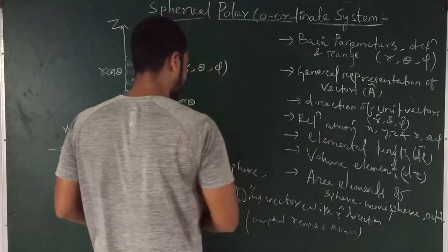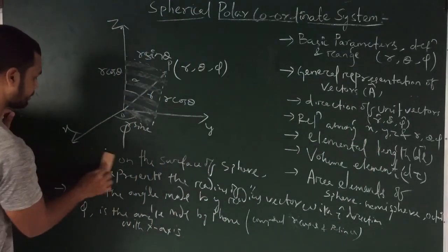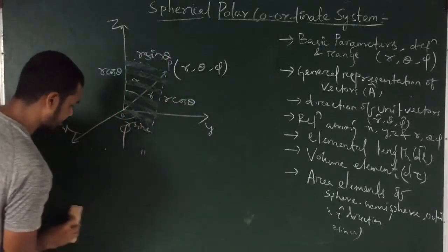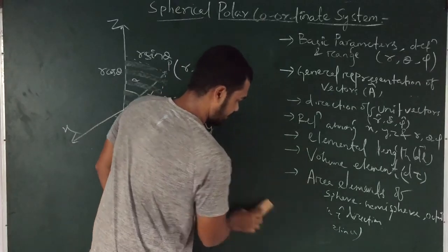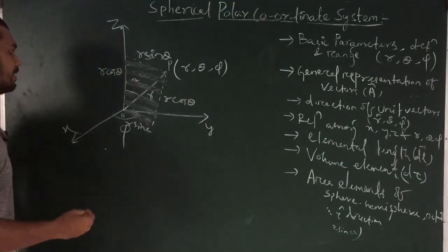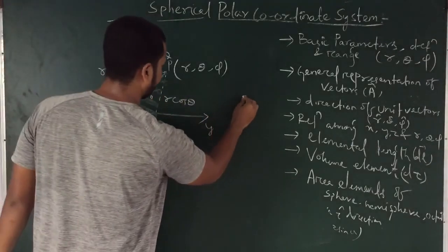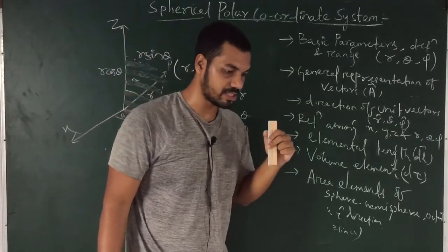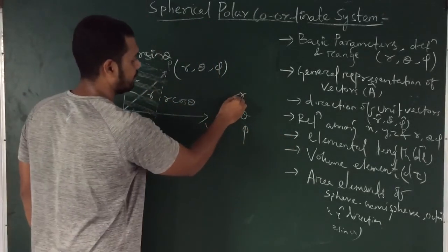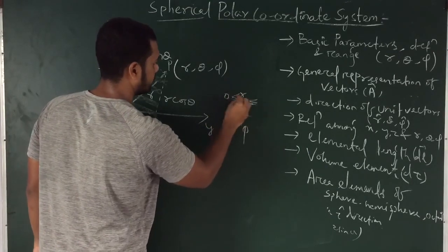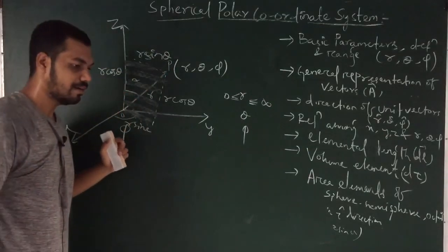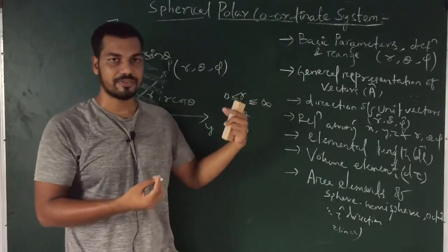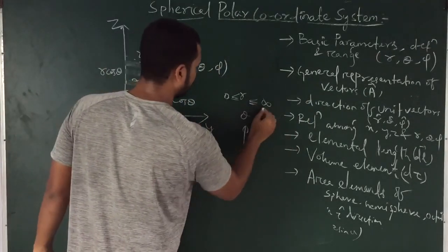Then we will go for the general representation of a vector in your spherical polar coordinate system. Before going to that, we must see the range of the spherical polar coordinates which are R, theta and phi. What will be the range of your R, theta and phi? I have already discussed the cylindrical polar coordinate system where the range of R is 0 to infinity, which is the same as spherical polar coordinate system. The range of R lies between 0 to infinity because the radius of a sphere may be 0 or very large.